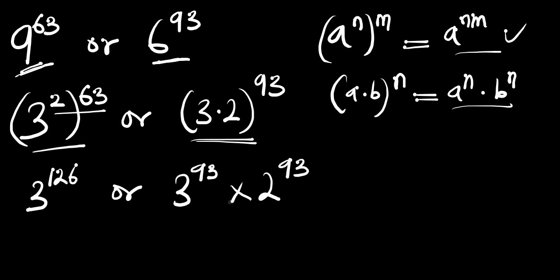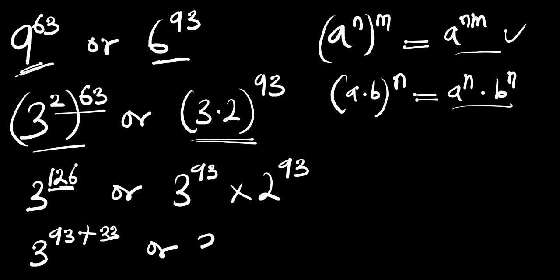The next thing we are going to do is rewrite 126 as the summation of 93 and 33. So we have 3 to the power of 93 plus 33, which is 126, versus 3 to the power of 93 times 2 to the power of 93.